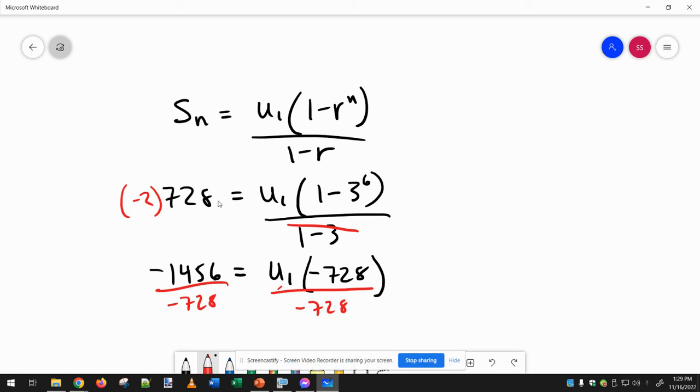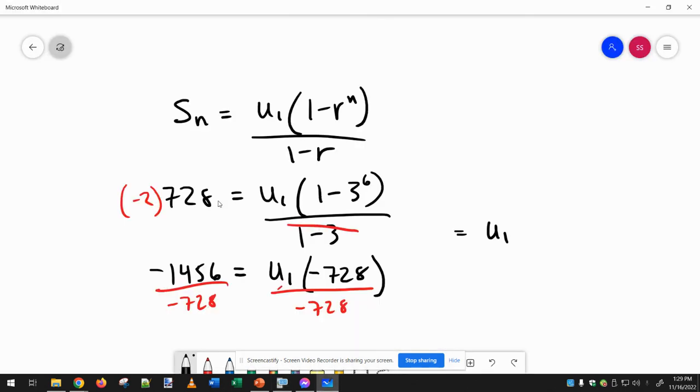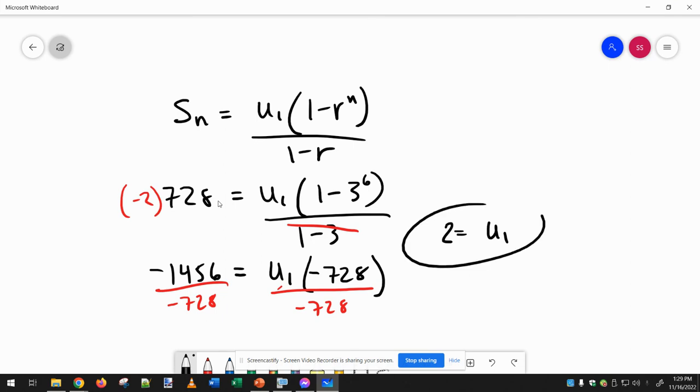And negative divided by negative is positive, so we get U1 equals 1456 divided by 728, which is 2. So the first term in the sequence is 2.